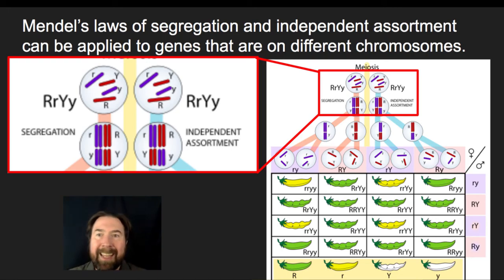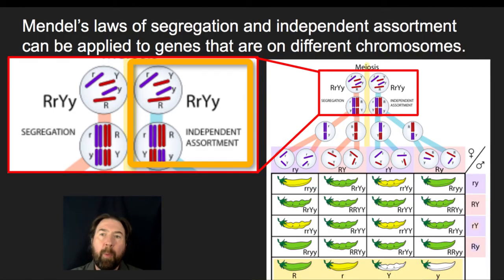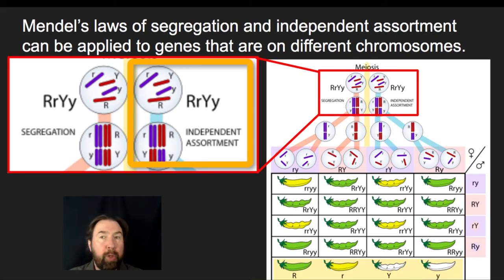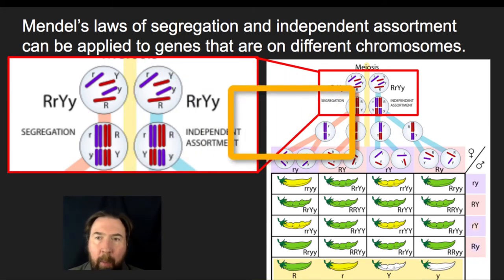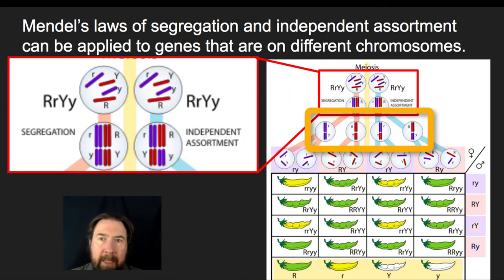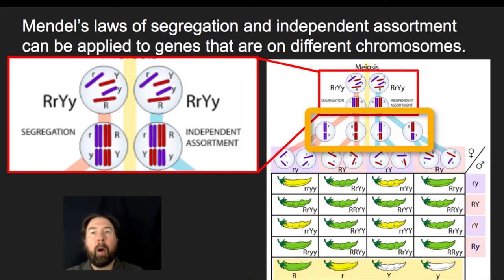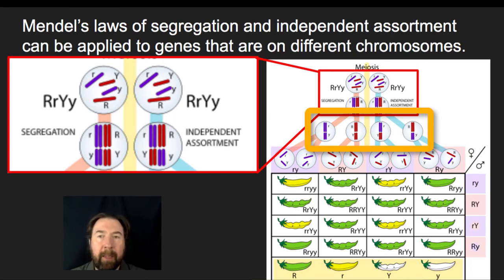The third law is the law of independent assortment. With an initial parent that is big R, little R, big Y, little Y — independent assortment means the passing on of the R allele does not influence the passing on of the Y allele. We can pass on any combination of R's and Y's. Because we have four different alleles — big R, little R, big Y, and little Y — there are four possible combinations: big R big Y, big R little Y, little R big Y, or little R little Y.